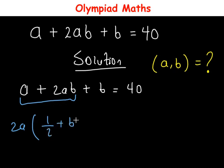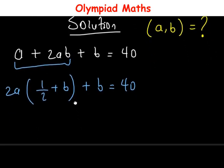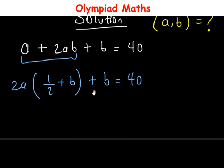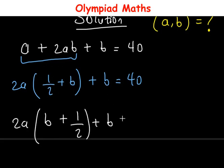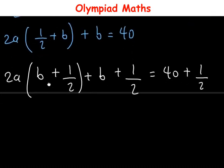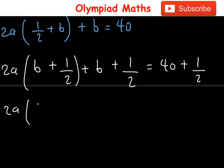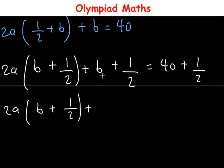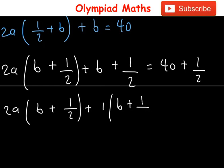Then we have plus b, and this equals 14. With this, we're going to add 1/2 to the left-hand side and the right side of the equation. So this equation becomes 2a into brackets (b + 1/2), then plus b, then add 1/2. So we have 2a into brackets (b + 1/2), plus 1 into brackets (b + 1/2).